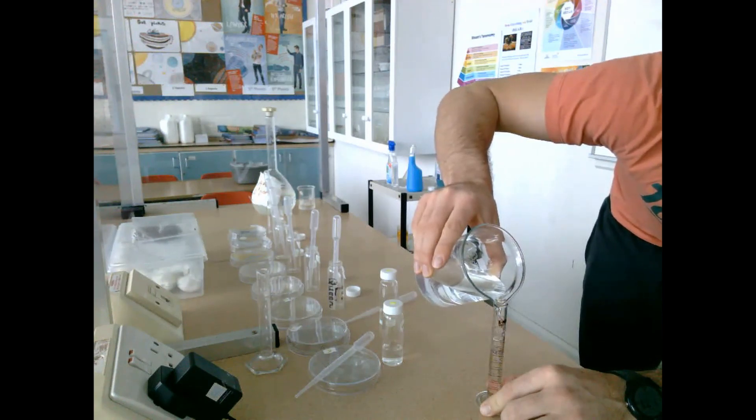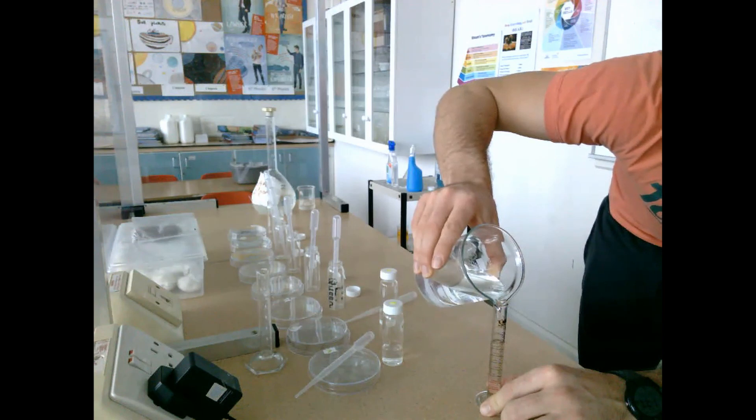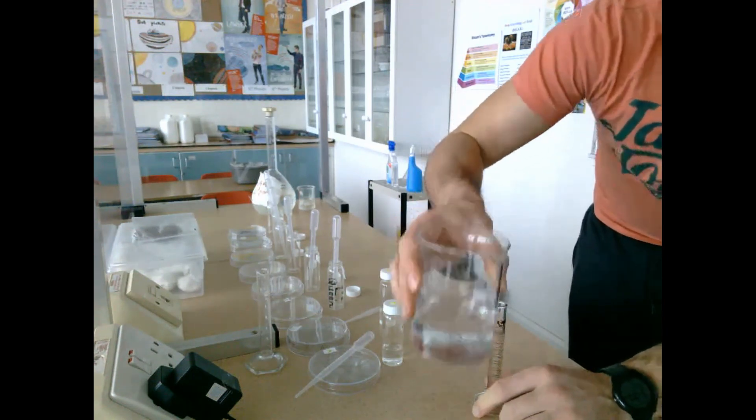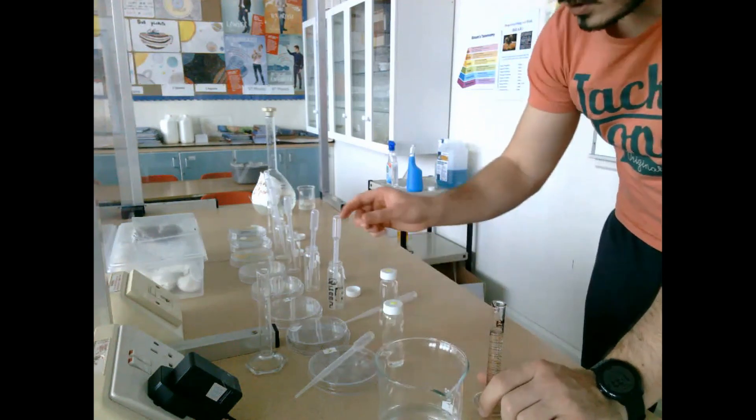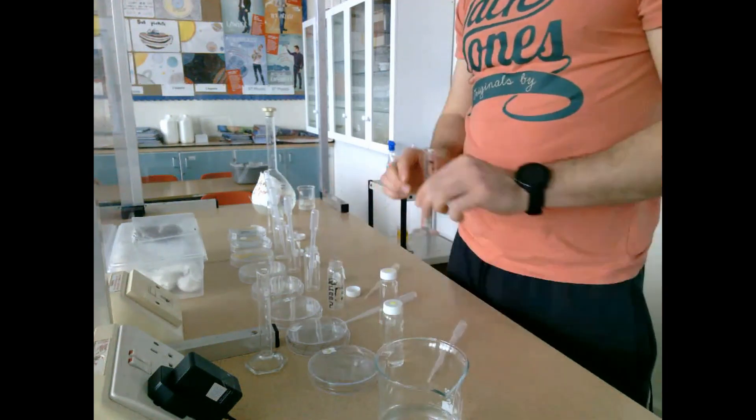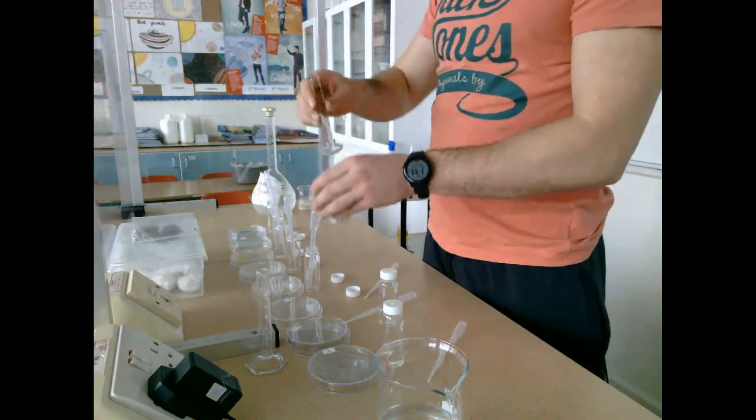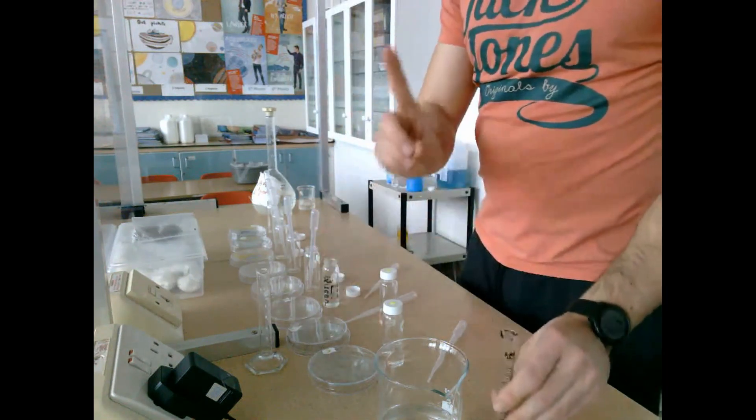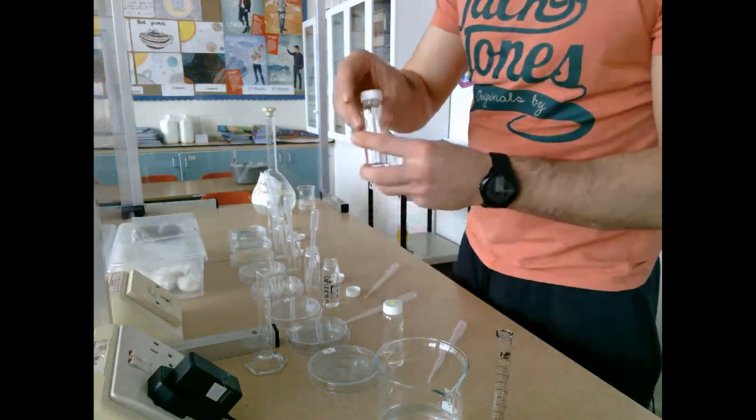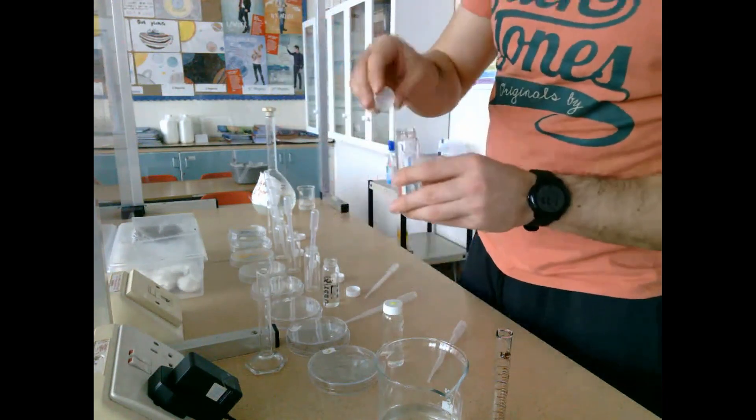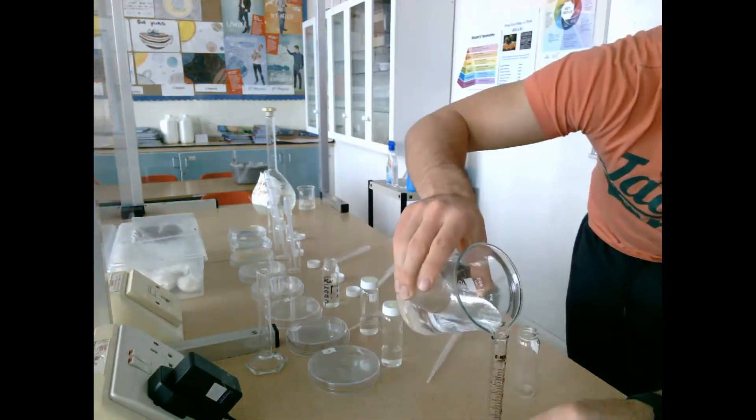To get the serial dilution started, we go back to glass jar number one and take one milliliter from that and add it to glass jar number two. This decreases the concentration to the power of ten. By the time we get to plate number eight, we wouldn't have been able to measure out concentrations that small using the mass balance scales.